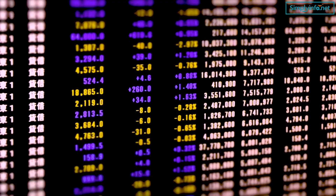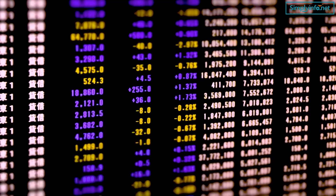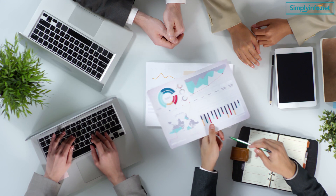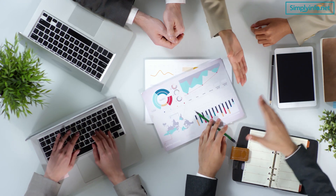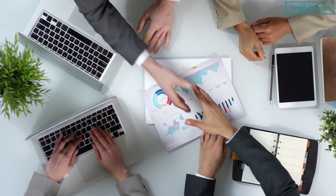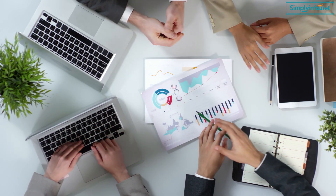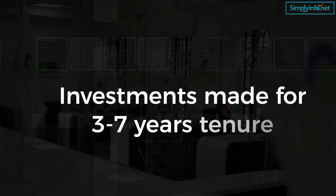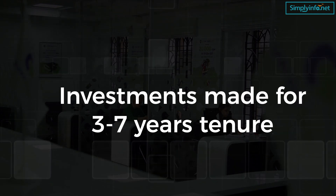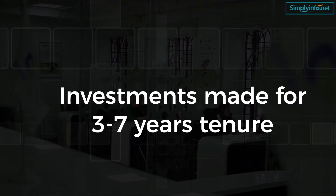Some companies might have higher growth in the initial years and some at the end of the tenure. Two companies can reflect the same CAGR even though the growth for one was faster in the initial years and the other's growth happened in the last year. CAGR can be reliably used for investments made for three to seven years tenure; if it is more than 10 years, CAGR may hide the sub-trends in between.